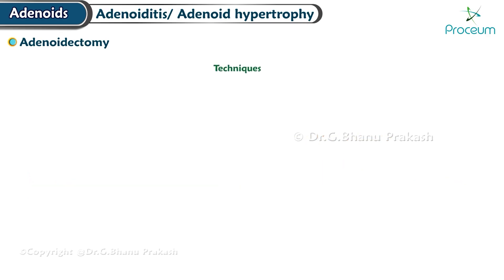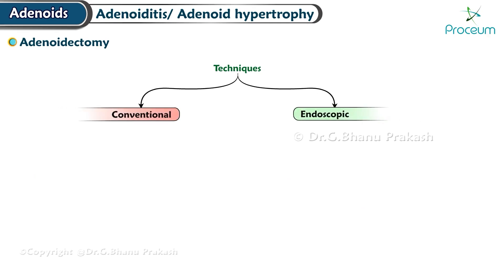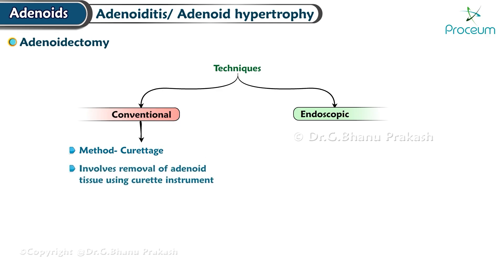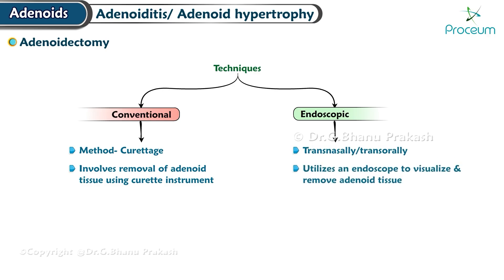Adenoidectomy techniques: There are two primary types — conventional technique and endoscopic technique. In the conventional technique, curettage involves the removal of adenoid tissue using a curette instrument. In the endoscopic technique, the endoscopic approach can be performed either transnasally (through the nose) or transorally (through the mouth), utilizing an endoscope to visualize and remove the adenoid tissue.